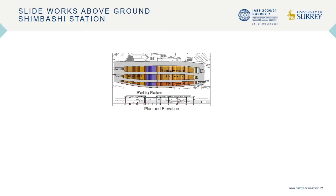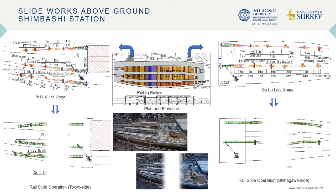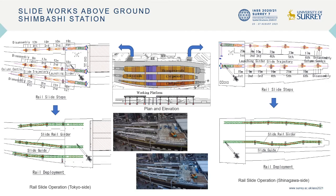This sheet shows Shinbashi Station. The main purpose of the project is to cover two large roofs over the existing platforms. The figures and photos show the summary of the rail slide operations. As shown in the figures above, rails are assembled on the working platform and each rail is slid outwards so that it can reach the columns that have been previously erected to support the large roofs.